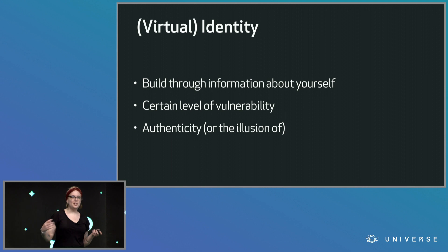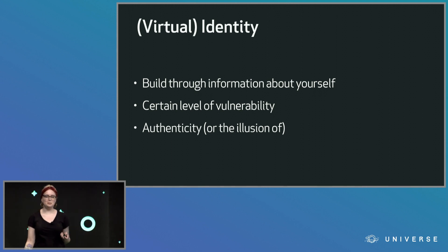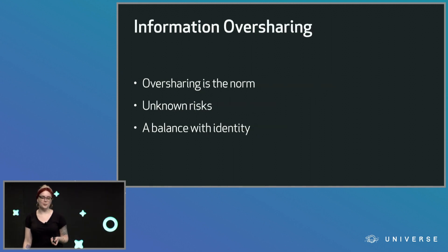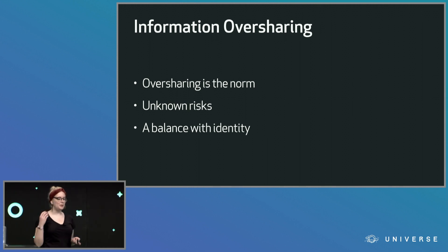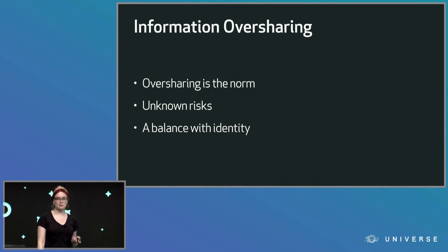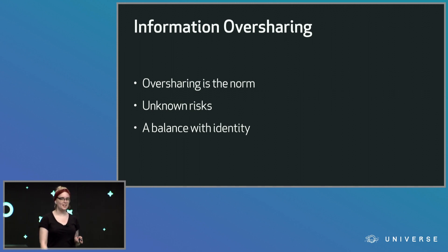You create a sense of authenticity — like, okay, I'm a person, here are some facets about me — or the illusion thereof, where you might be pretending to be something else. On the web right now, what we have is information oversharing. Oversharing has become the norm — Instagram, it's like, oh look, this is what I ate for lunch, dinner, breakfast. That's probably too much information. You also tend to tag your location, and if someone really wanted to track you, that's all they would need.